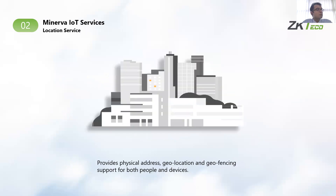Then we have the location service. The location service allows for physical address mapping to geolocation on maps and also supports geofencing based on geolocation. These locations can be assigned to both people and devices to support various business problems. Apart from geolocation and geofencing, the location service also provides virtual area segregation.